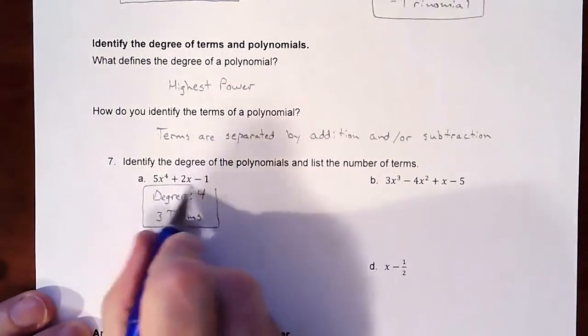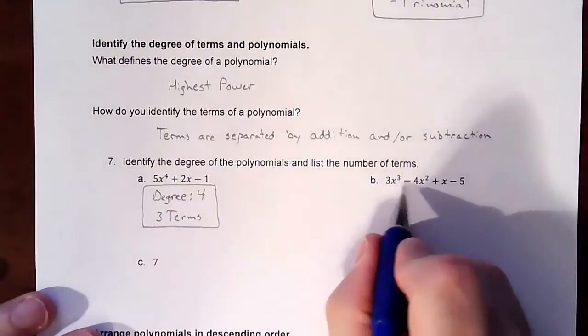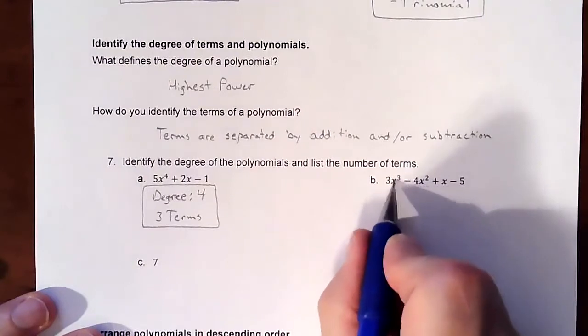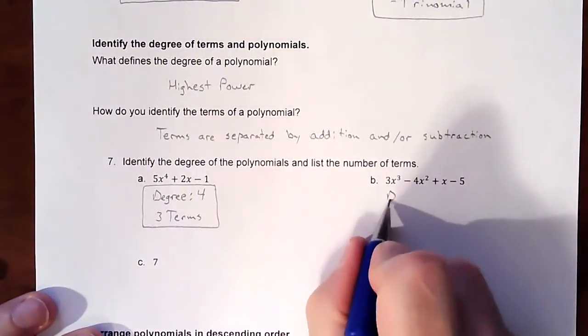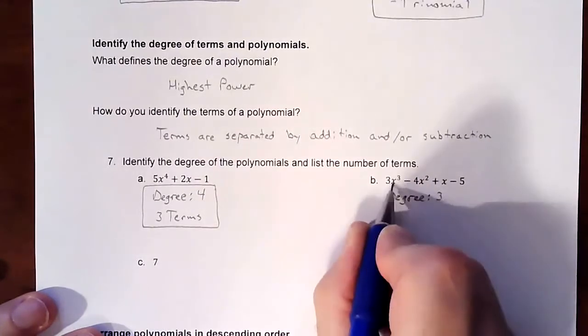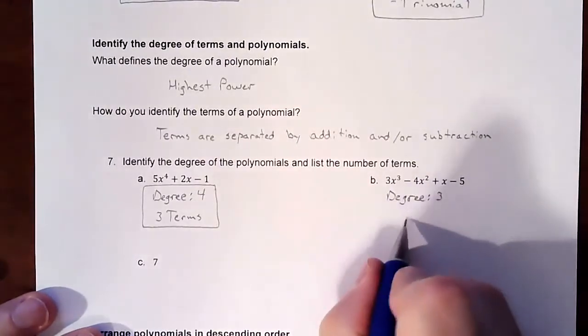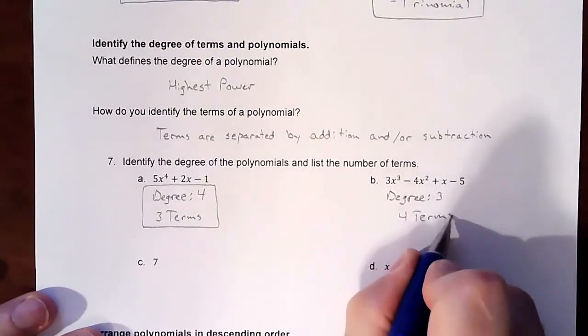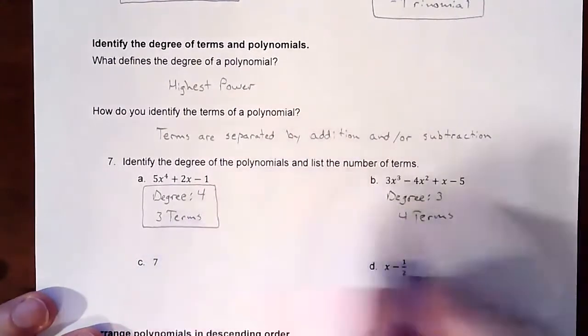Okay, on this one, just wanted to double check that there wasn't any other higher powers in it. Three is your highest power, so your degree is three and you have one, two, three, four terms. And there isn't really a name for that like there is for trinomial.